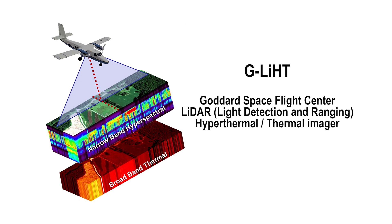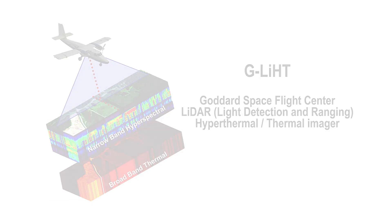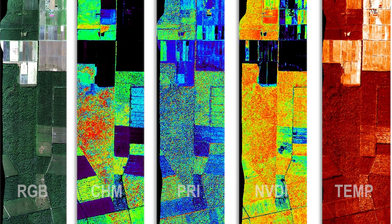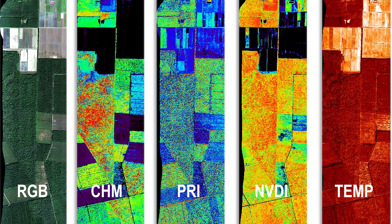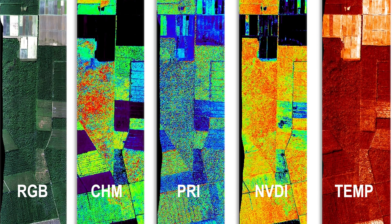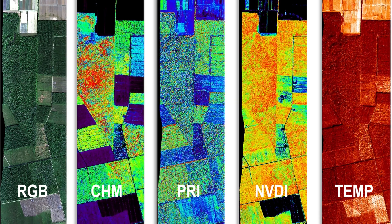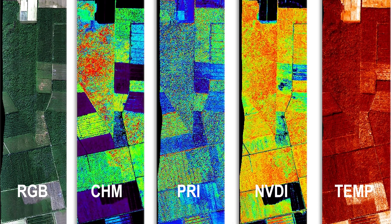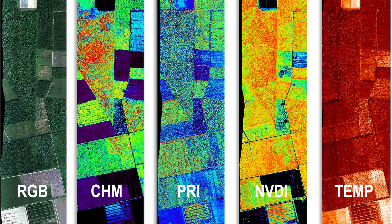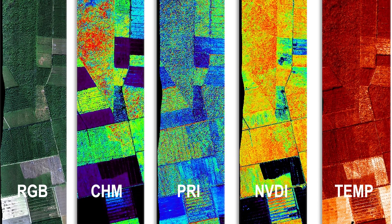G-Lite is an airborne imaging system operated by NASA's Goddard Space Flight Centre. Using the LIDAR and hyperspectral thermal imager, it collects multi-layered data to map terrestrial ecosystems.